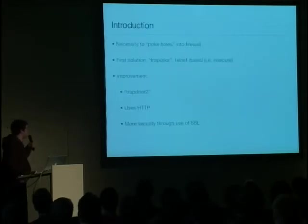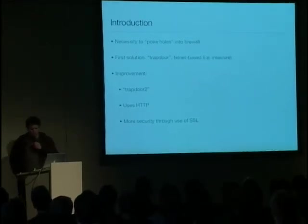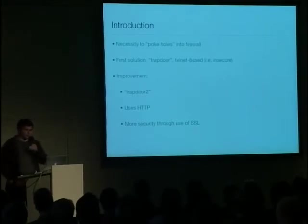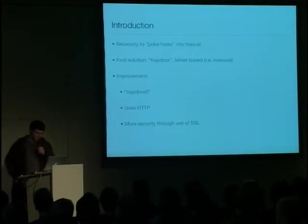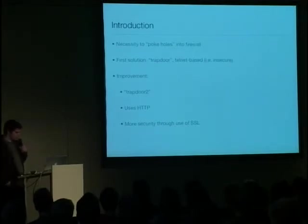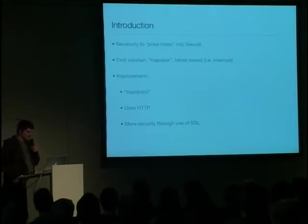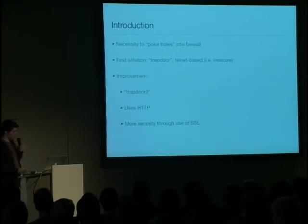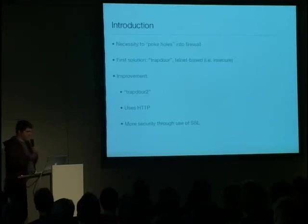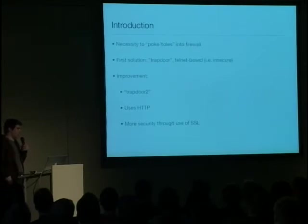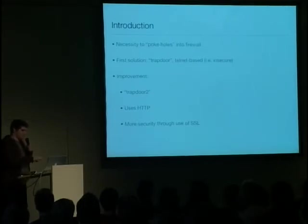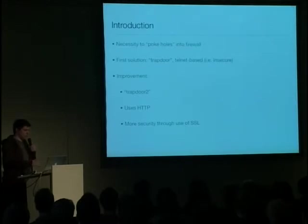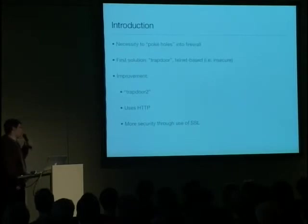About Trapdoor 2 itself — where does it come from? My co-developer Clifford Wolf, some of you probably know him: he regularly does lectures at the Chaos Communication Congress and worked on Rock Linux. He had the necessity to poke holes into firewalls — that means to allow a certain computer to connect to, for example, SSH, but only for a time window of 30 seconds or something like that. The first solution was called Trapdoor. It was Telnet-based: you connected using Telnet, entered a secret code, and then the SSH port for your source address opened. Of course, Telnet is insecure, so it clearly had to be reworked, and the improvement is Trapdoor 2.